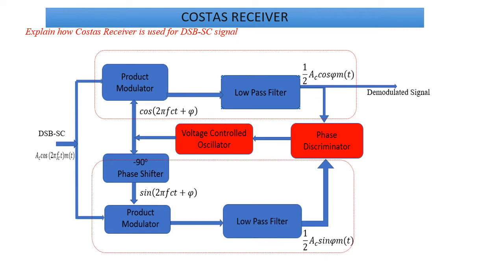The next question is your COSTAS receiver. One of the frequently asked questions is: explain how COSTAS receiver is used for DSB-SC signal, which was asked for 7 marks in the year 2021. Basically, what is meant by COSTAS receiver? It is a practical synchronous receiving system for DSB-SC signal. It is used for carrier signal recovery from the suppressed carrier modulation technique. The COSTAS loop is used to make both the carrier and the locally generated signal in phase with each other.